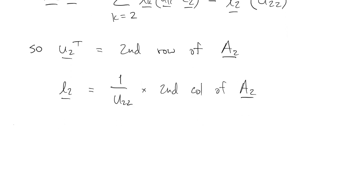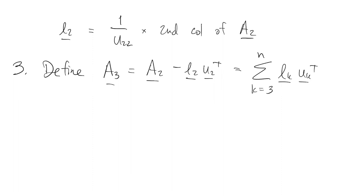So now A3 is A2 minus the most recent outer product that we got. That means that the sum starts at three now. And we can go on looking at the third row of this, and the third column of this, and so on until we filled up the L and the U matrices.